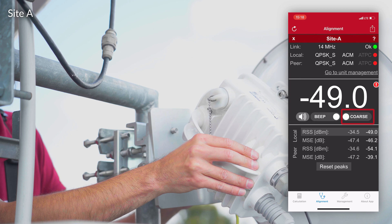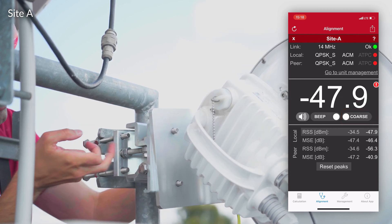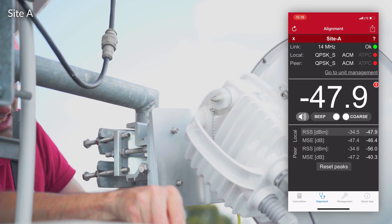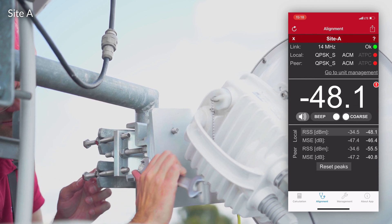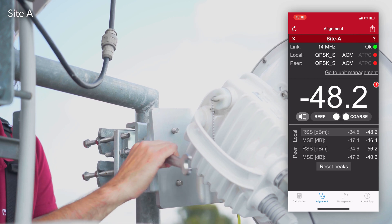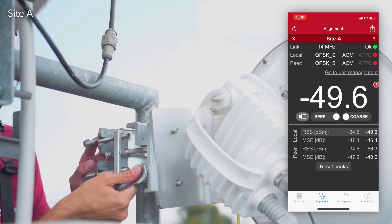We start with coarse setting for initial alignment, slowly adjusting the antenna to get the best possible gain. As you can see, Michal first goes through the whole range horizontally, then fixes the position and moves to the vertical alignment.